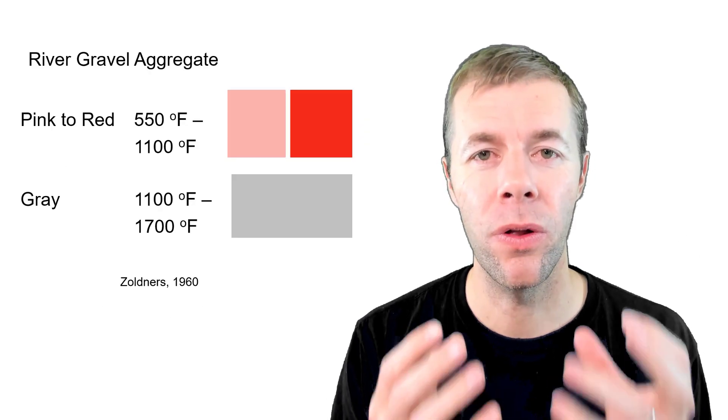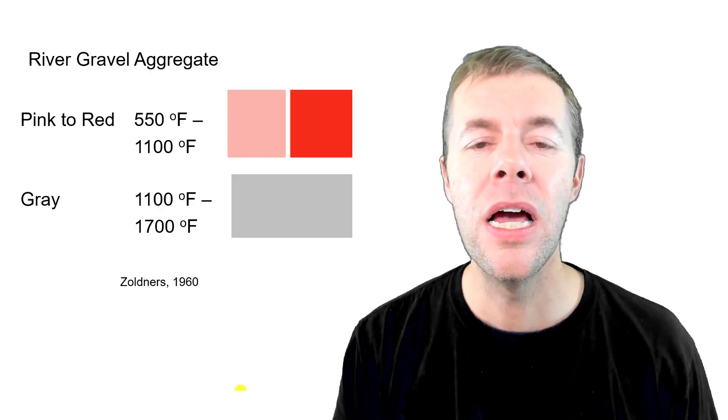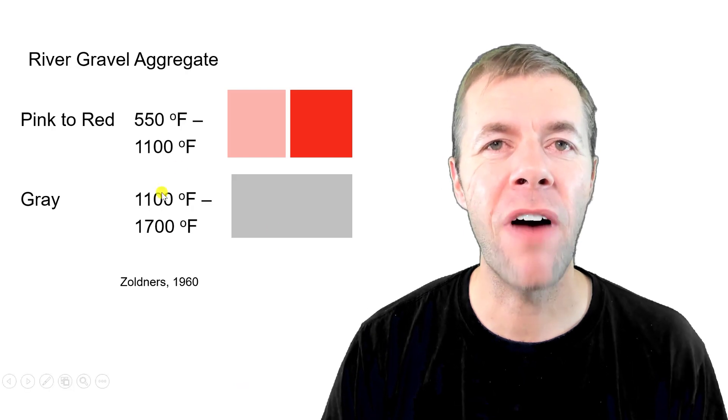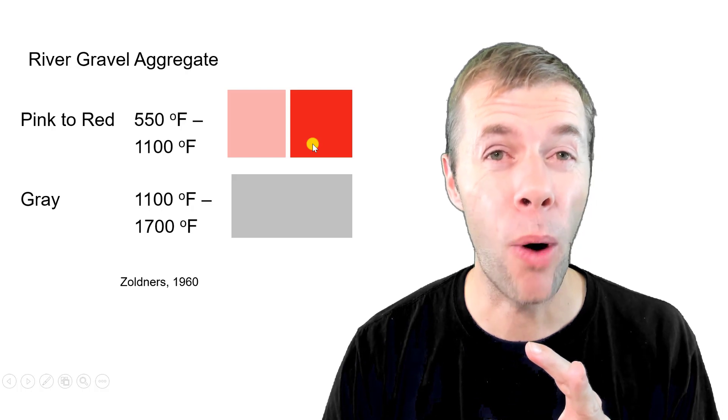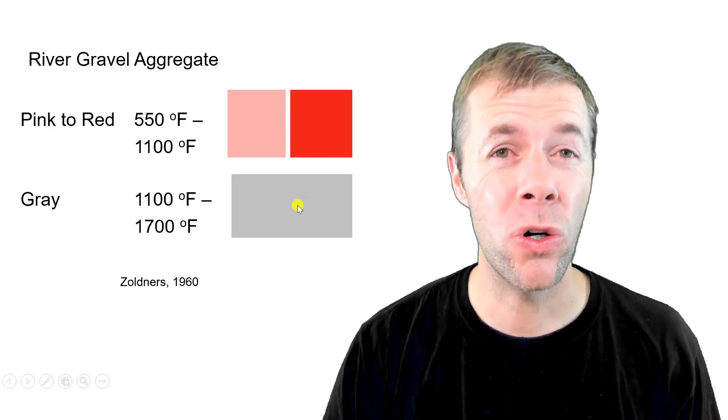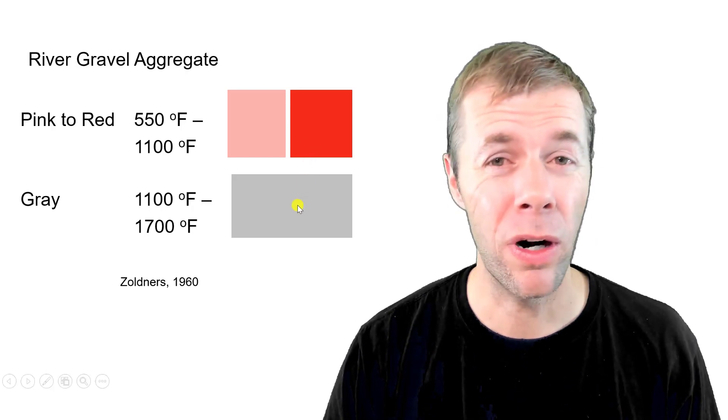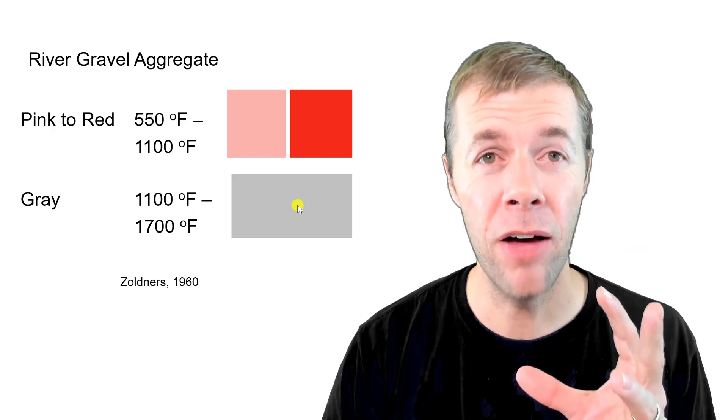For example a river gravel, a siliceous aggregate. Right when it gets to around 550 degrees Fahrenheit it starts to turn pink. When it gets to about a thousand it gets to a bright red. And after the material turns gray it's game over. It's deteriorating heavily after that.